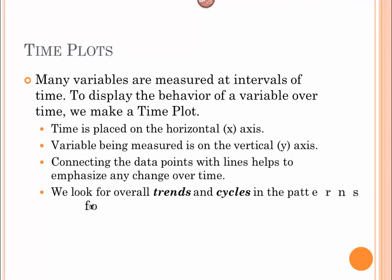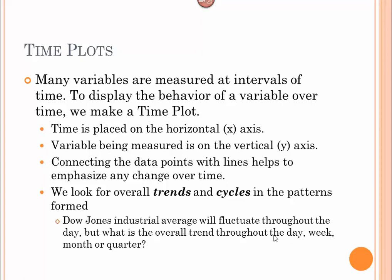What we're looking for is trends and cycles in the patterns. And it may not necessarily be over a 24-hour period. You may want to look at it over a year's period of time. But that's the typical thing that we're looking for in a time plot to discover. The Dow Jones Industrial average will fluctuate throughout the day, but will the overall trend throughout the day, the week, the month, or the quarter? Those are all different things we may want to look at.